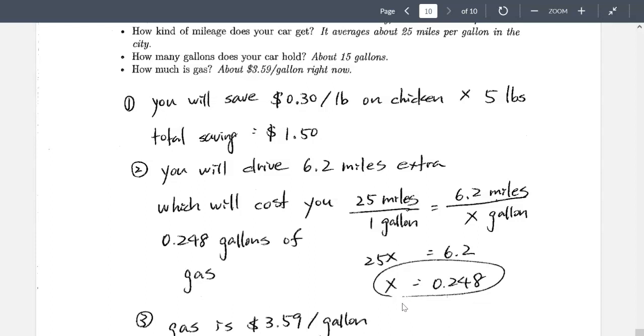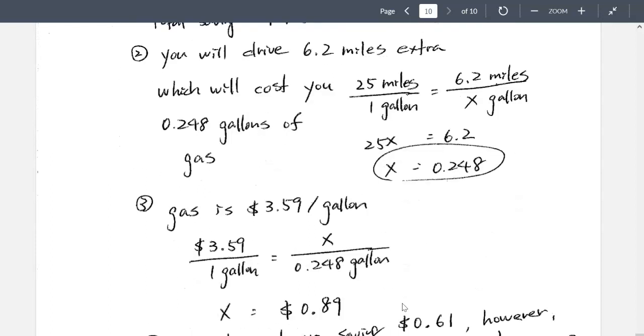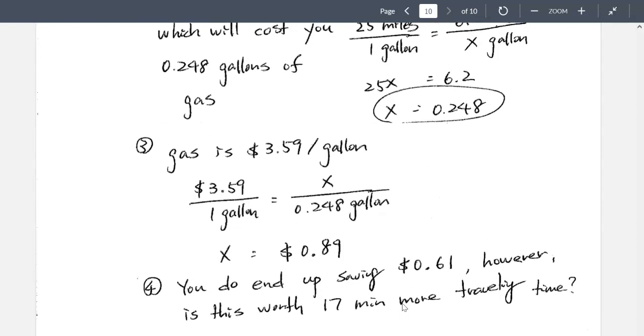Okay, now, how much is that going to cost me? So since each gas costs $3.59 per gallon, now, how much, x is the dollar amount we don't know, but we know we need to drive 0.248 gallons. Once again, we use proportion, dollars to dollars and gallons on the bottom. We cross-multiply, find out, okay, to drive that extra, it costs me $0.89.